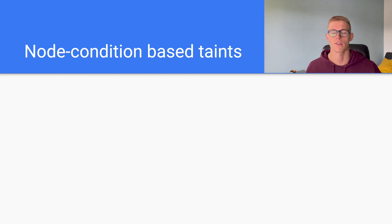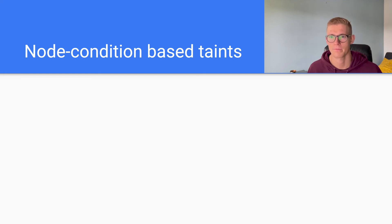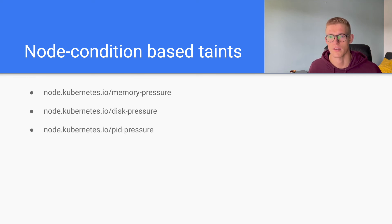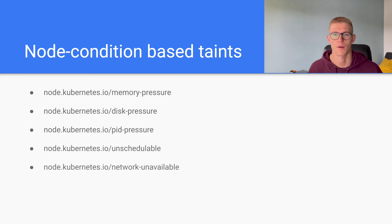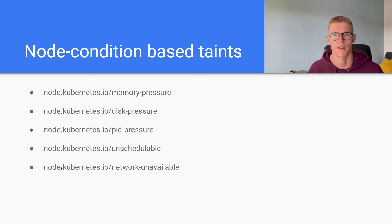Some taints are actually generated by the Kubernetes node controller itself, and these taints are based on node conditions. If we look at a node definition using kubectl get node -o yaml, we'll see a set of conditions under the node — examples include memory pressure, disk pressure, process ID pressure, unschedulable, and network unavailable. What the node controller does is take these signals and apply taints based on them. For example, if a node doesn't have an available network, a taint will be applied to that node to repel pods from being deployed on it.